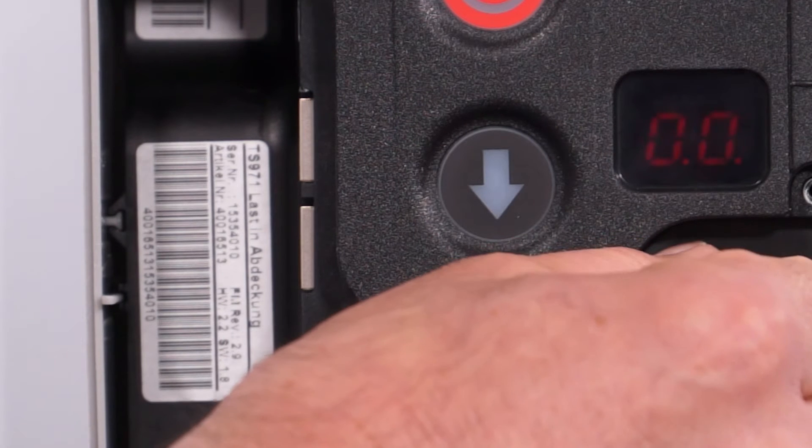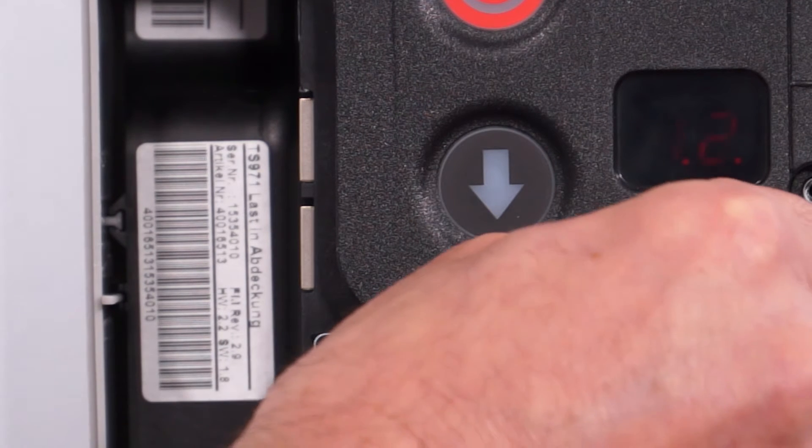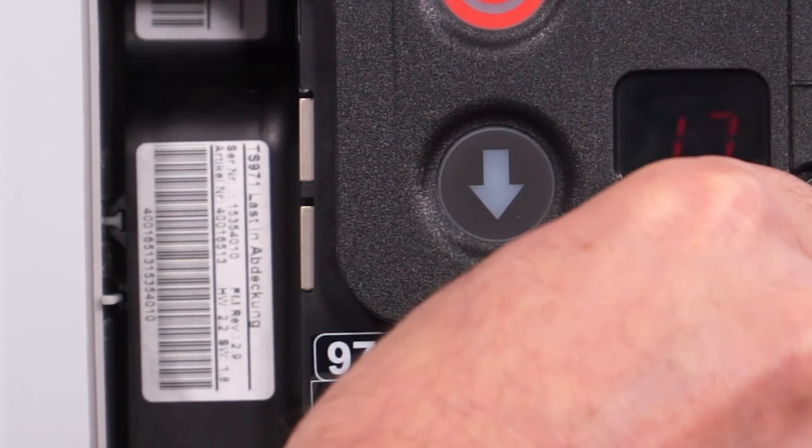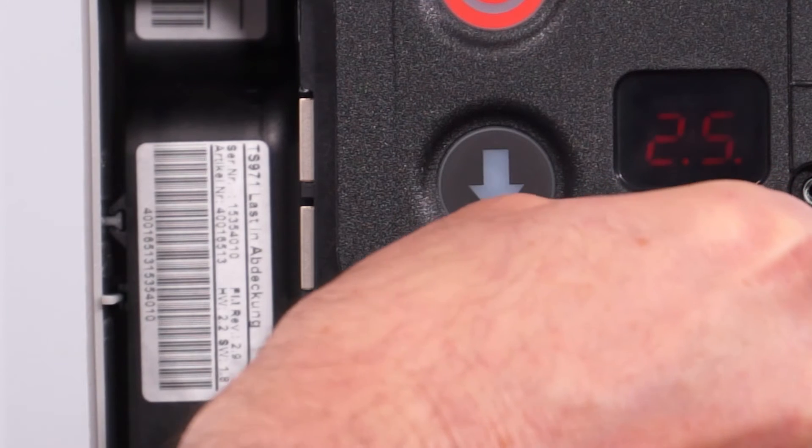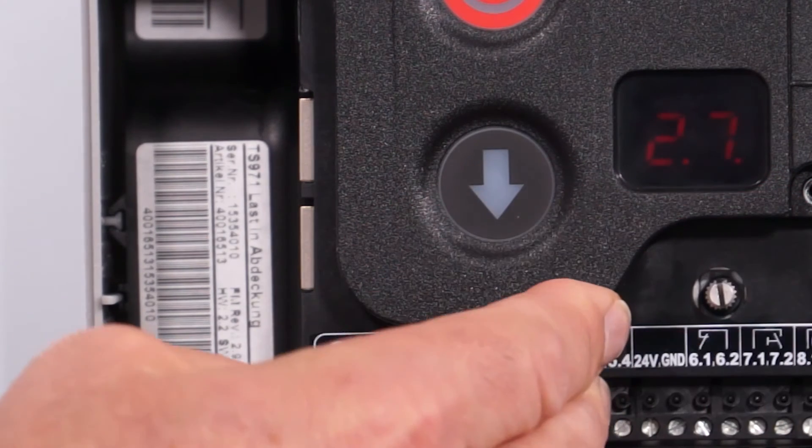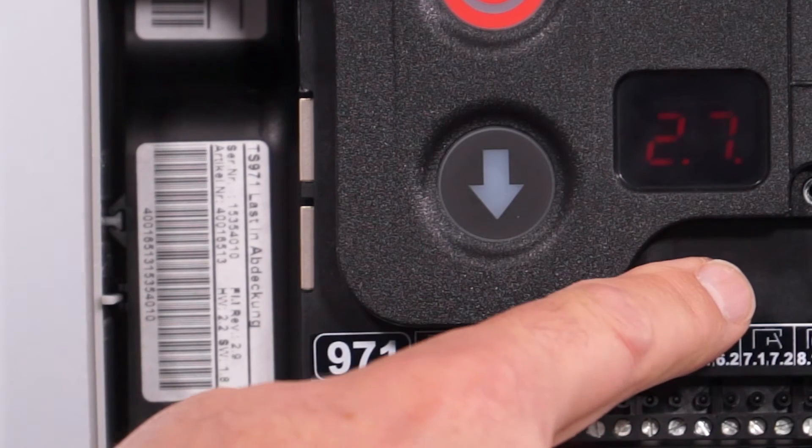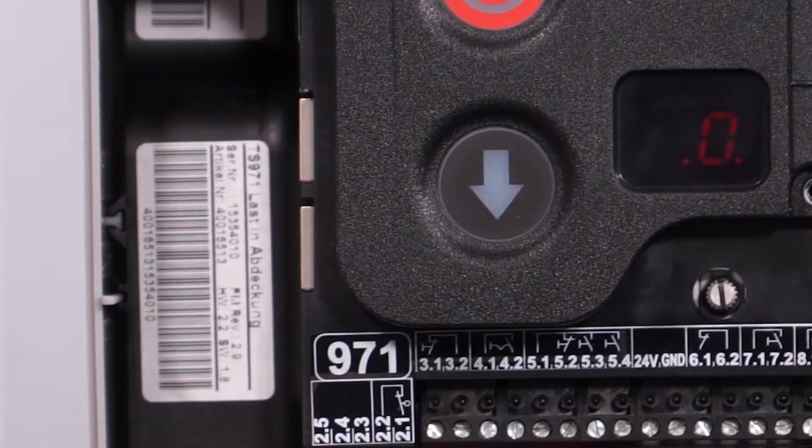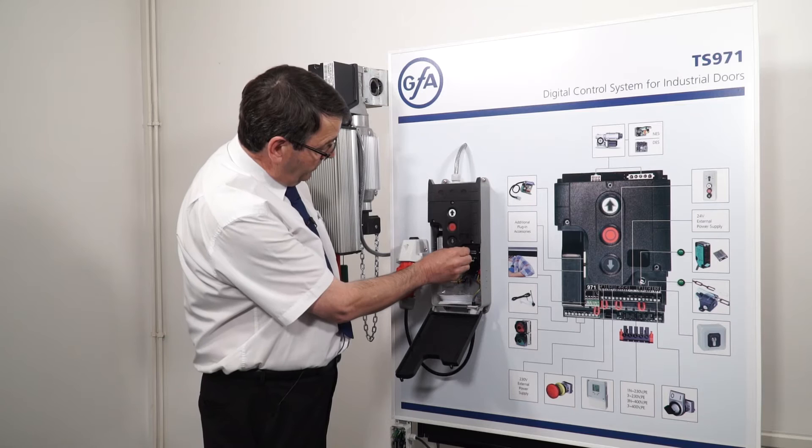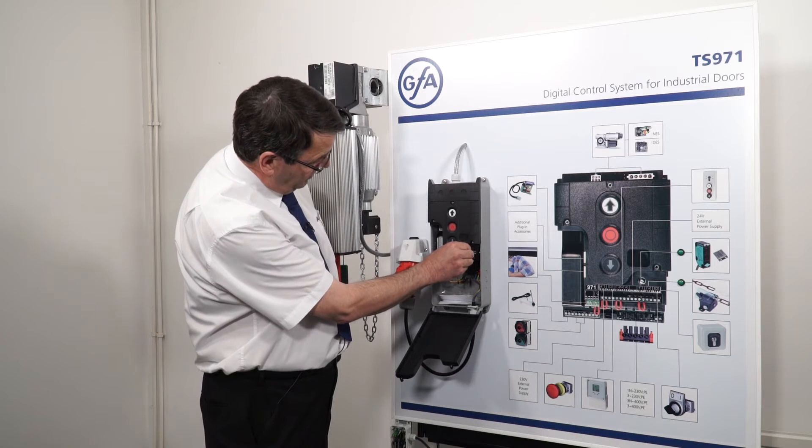We now need to change to parameter 2.7 to set up the red traffic light function. So when 2.7 is up, confirm it by pushing in the silver button and we come up with a zero. We need to change that to a three.